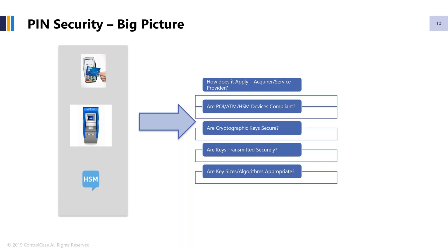Number one: how does PIN security apply to me? I could be an acquirer, a service provider — how am I involved in dealing with PIN numbers? Number two: are the POI, ATM, and HSM devices that are part of my infrastructure compliant to the relevant standards? Devices and physical hardware used in the ecosystem play a big part in securing PINs, since you're entering PIN numbers from a security perspective. Next, going a level deeper: are the cryptographic keys secure? Anything to do with PIN security involves public key infrastructure, encryption keys, and so forth.